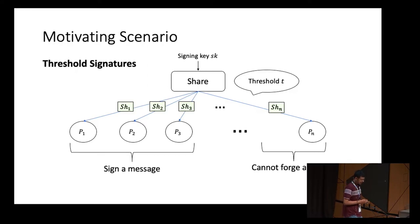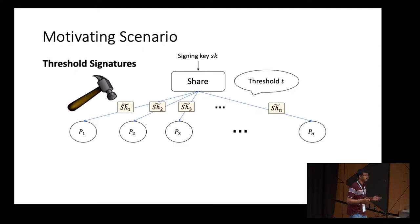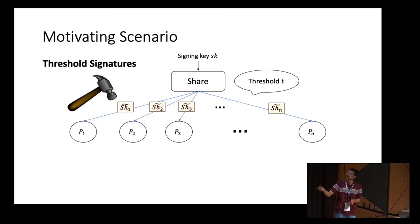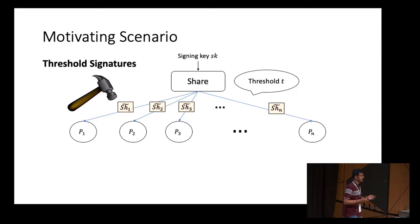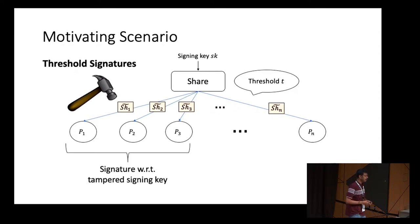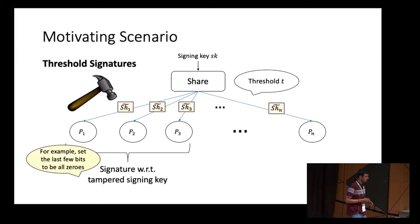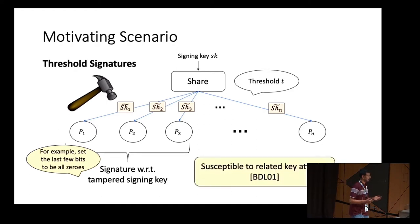Now consider an adversary who corrupts the channel through which the parties receive their shares and induces a tampering attack. The tampered share of party P1 is denoted SH1-tilde. When a group of T or more parties come together and generate a signature with respect to these tampered shares, they are implicitly generating a signature with respect to a tampered signing key. For example, this attack could fix the last few bits of the signing key to all zeros, making the system vulnerable to related key attacks — and this is devastating.